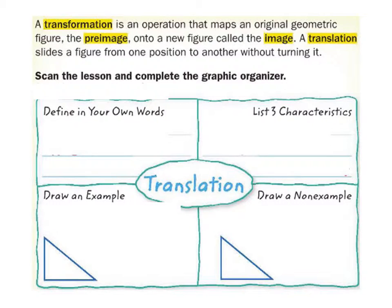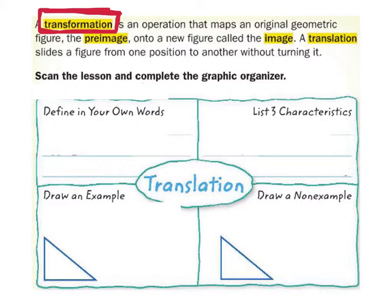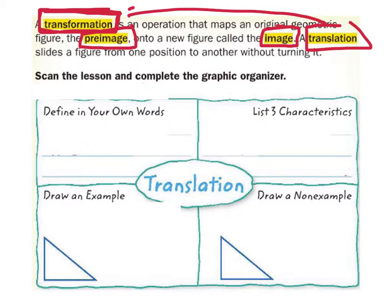Let's look at translation. This is a type of transformation, meaning we take something and transform it. Sometimes it will look completely different; other times it will look exactly the same but be in a different place. We've got three terms to go over: pre-image, image, and translation — which is a type of transformation.